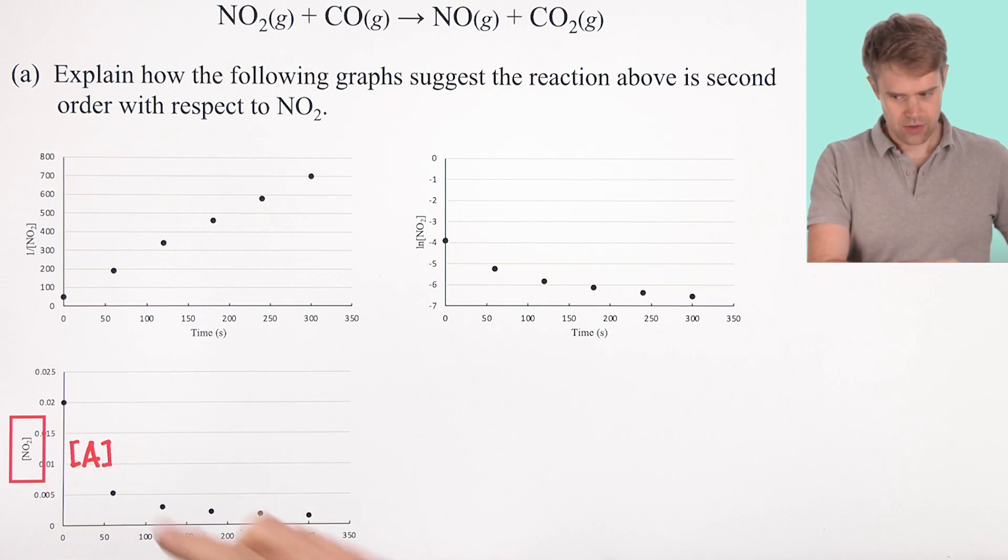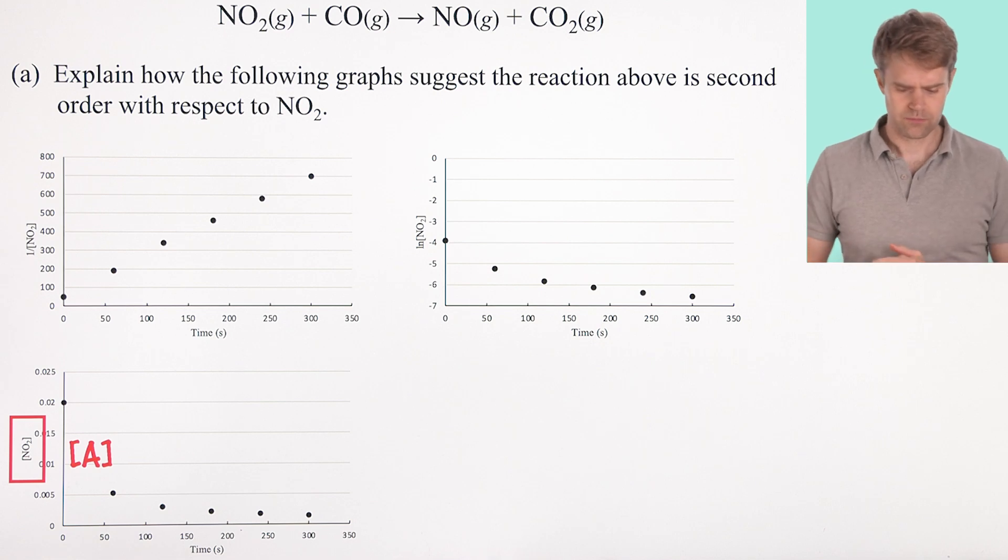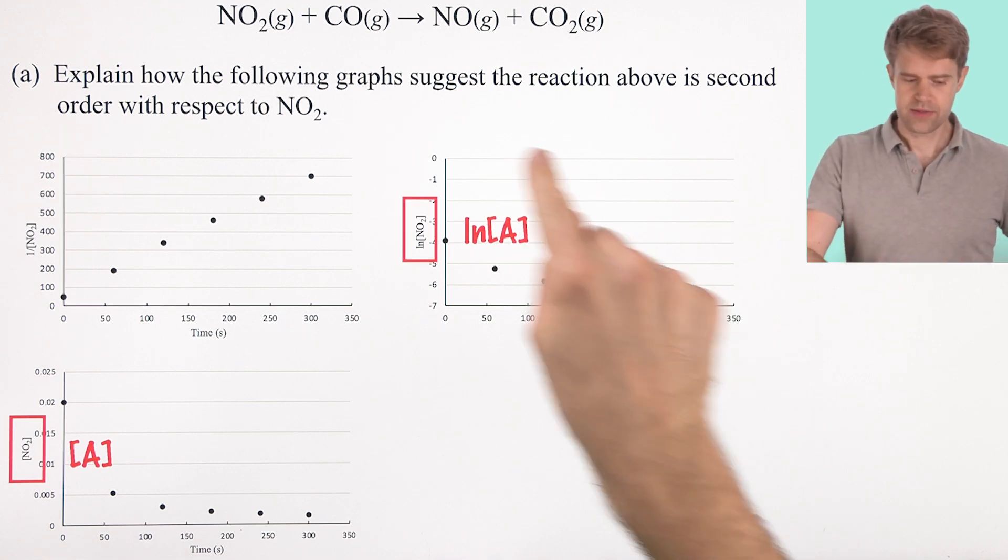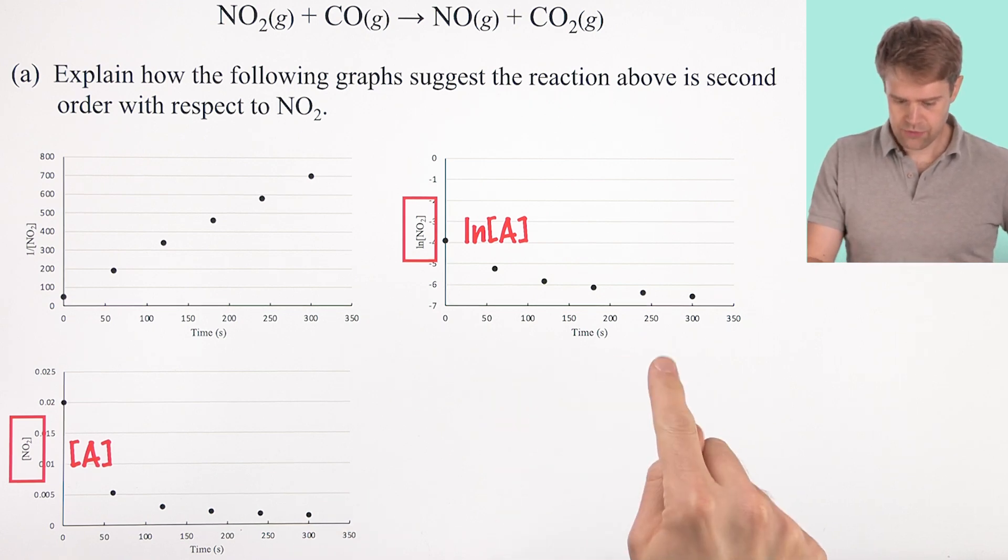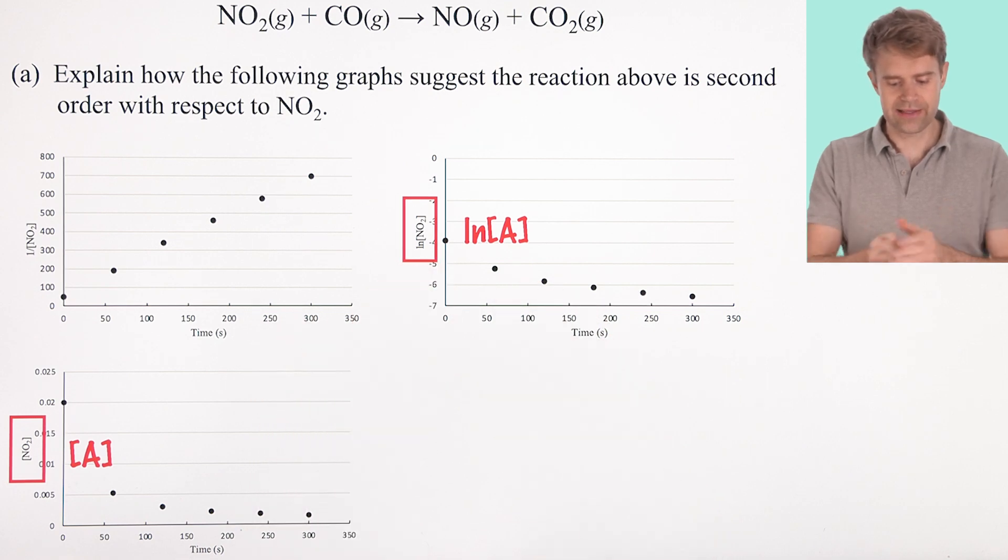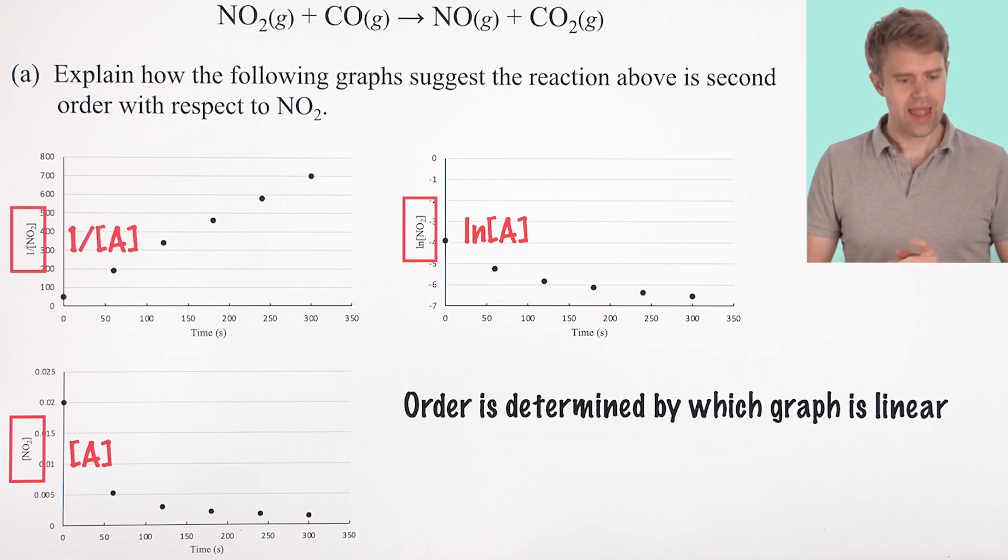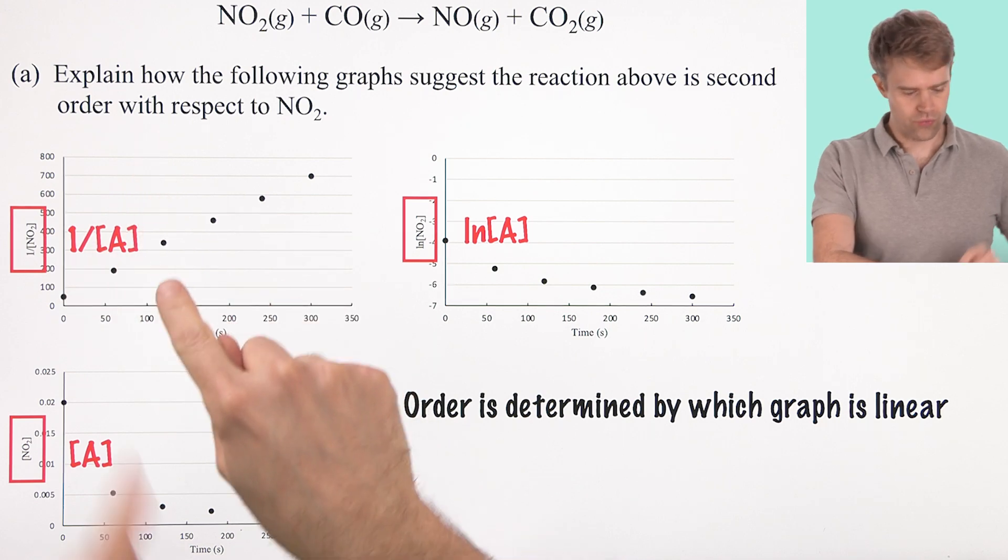Generically speaking, we can think of this as A, the molar concentration of A. The second graph plots time versus the natural log of the reactant or ln A. And the third graph plots time versus the inverse of the reactant or 1 over A.